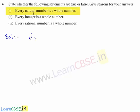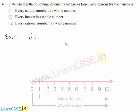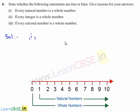The first statement is: every natural number is a whole number. The statement is true because the set of natural numbers starts with 1 and the set of whole numbers starts with 0. Hence the natural number set is included in the whole number set. Therefore every natural number is a whole number, and the first statement is true.